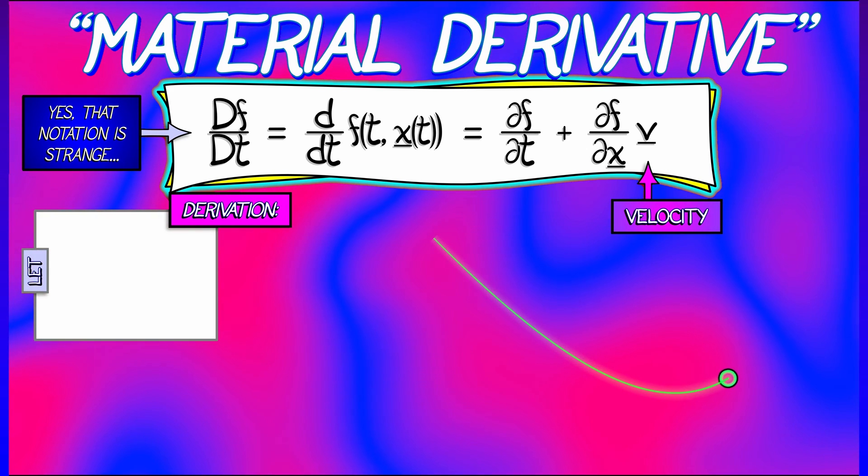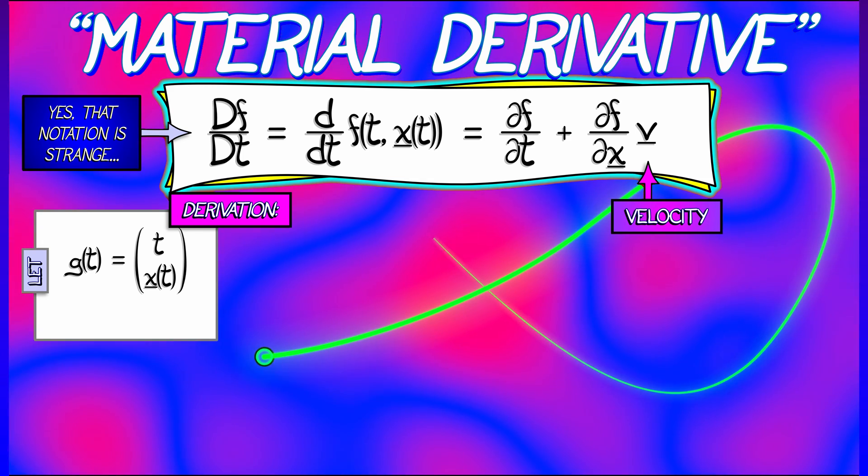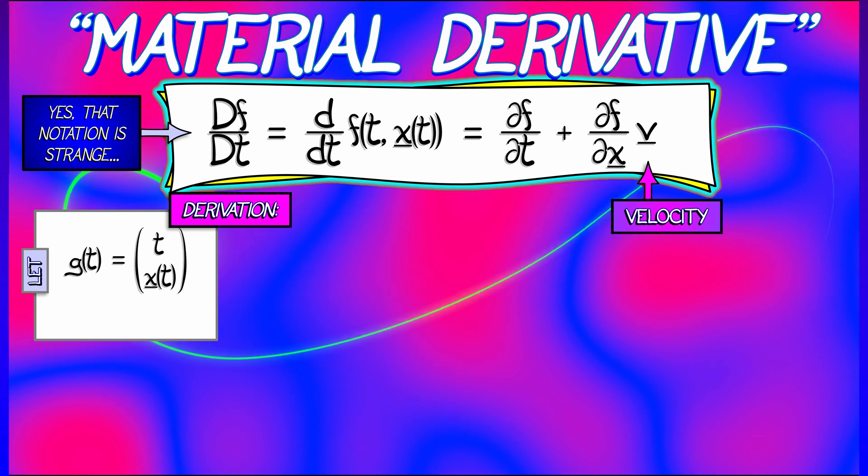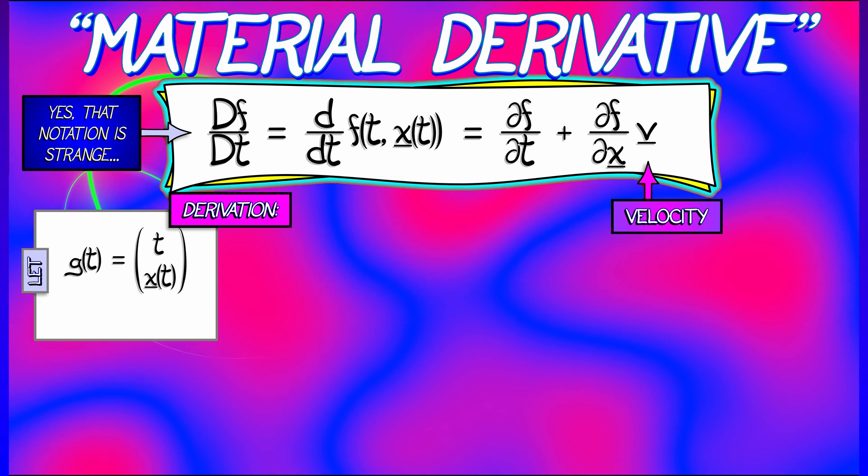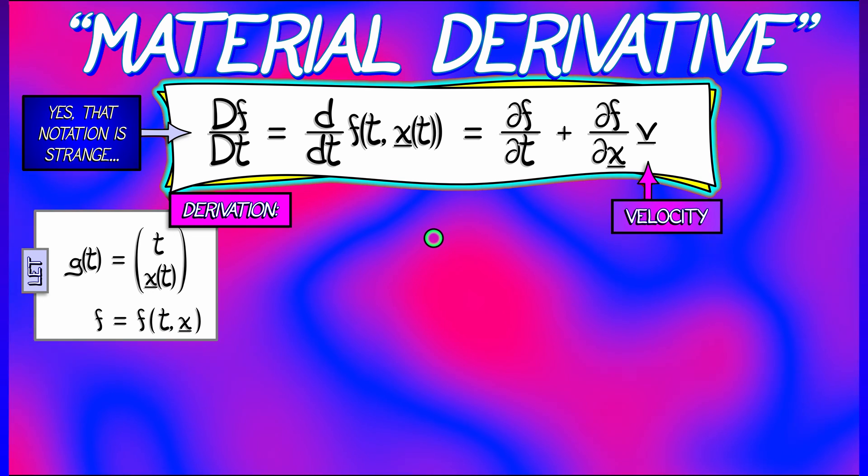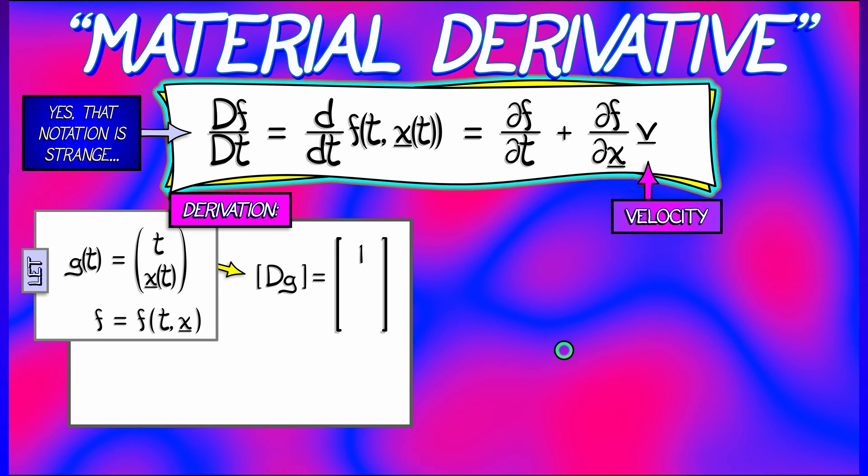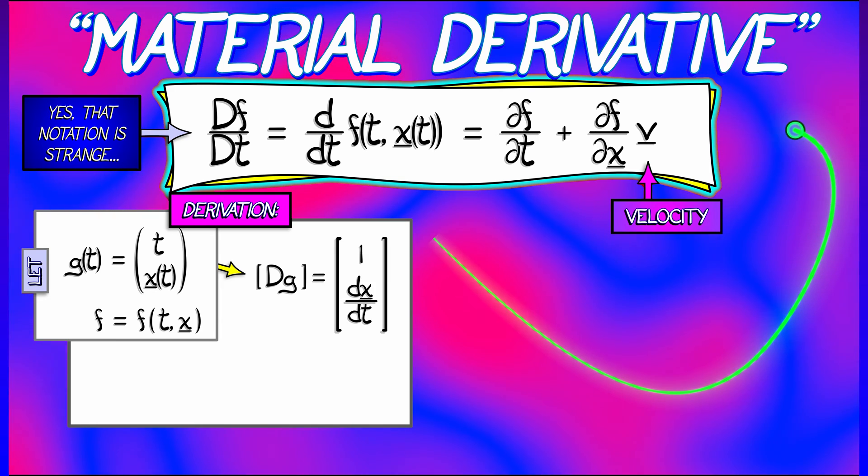Let's let g of t be the function t and then x of t that records the time and then the space. And then we're going to keep f the same as it is. f is just t comma x. Then, to apply the chain rule, we're going to take the derivatives. The derivative of g with respect to t is this column vector that first of all has a 1 and then has dx/dt.